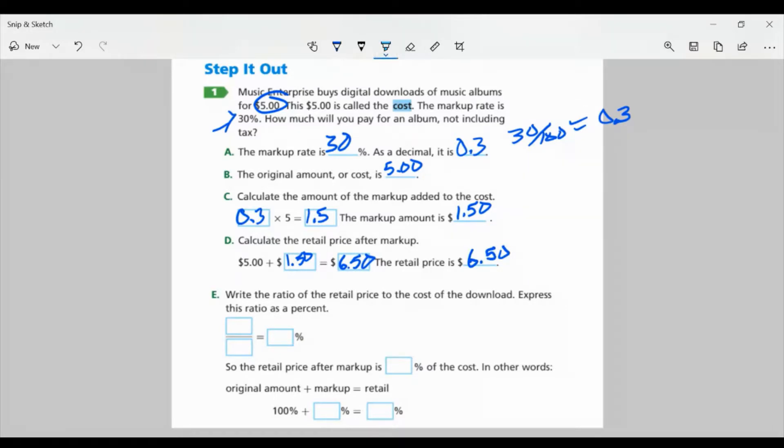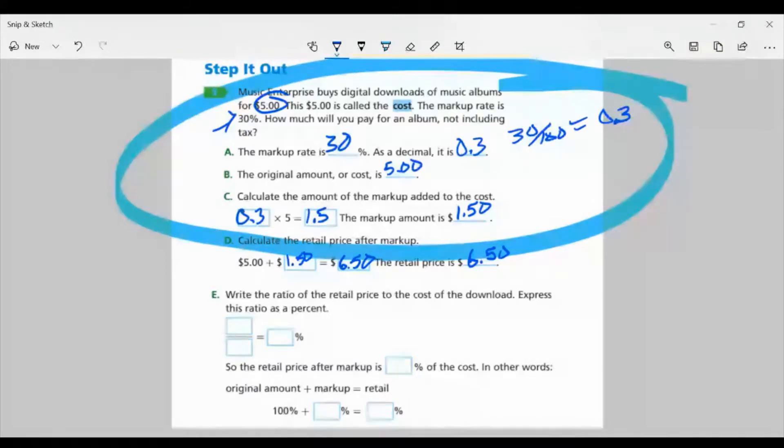This whole process right here is just like we did in lesson 2.1, where we found the percent of our original, and then added it, or we subtract it depending on whether it's an increase or decrease. In this case, it's an increase of 30%. So we found 30% of $5 and added it to the original amount to find our new price.